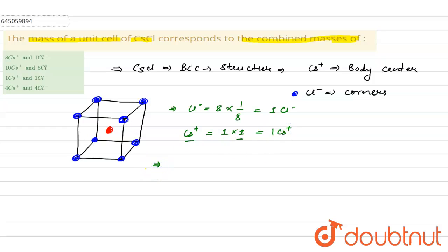From here we can see that cesium chloride is the combination of one Cl- plus one Cs+.